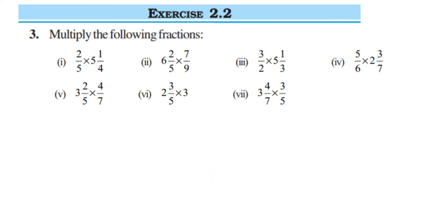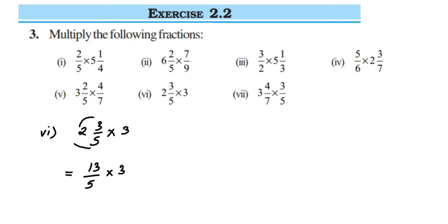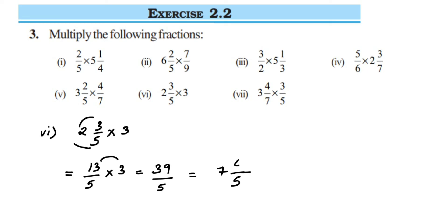Sixth sub-question: 2⅗ multiplied by 3. Open the mixed fraction: 5 times 2 is 10, plus 3 is 13, so 13/5 multiplied by 3, giving 39/5. This is an improper fraction, so convert to a mixed fraction: 7 fives are 35, and to get 39 we need to add 4 more. So the answer is 7⁴/5.